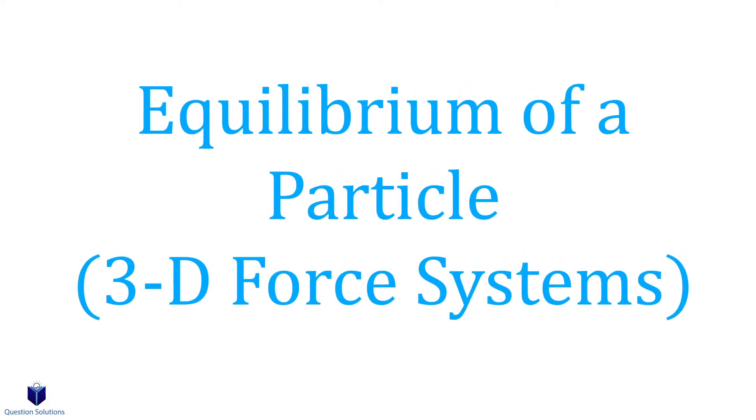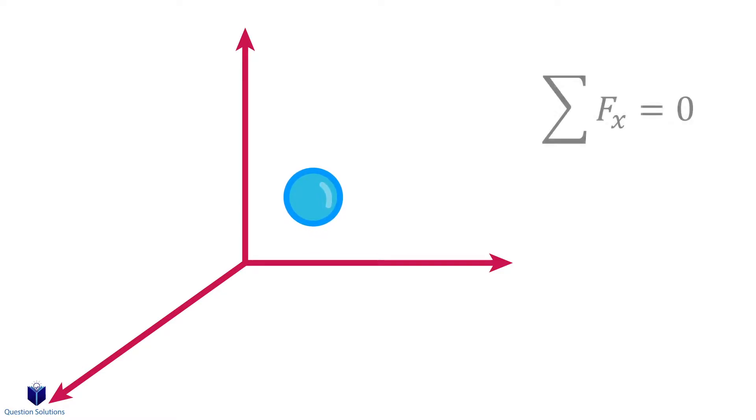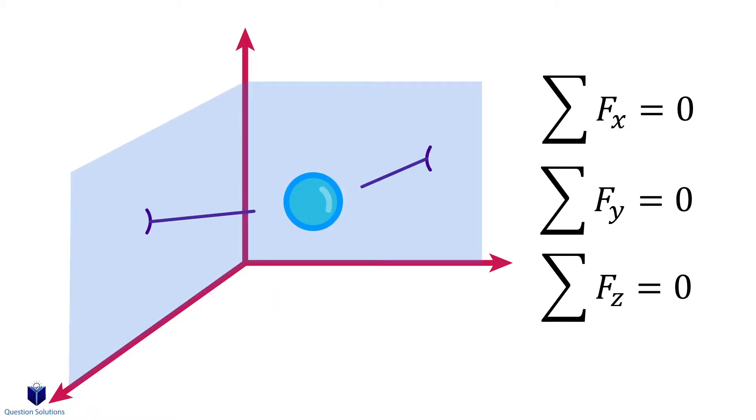Let's take a look at how to find unknown values when a particle is in equilibrium in three dimensions. We have the following equations to keep in mind. All we're saying is that for an object to stay in equilibrium, or in simple terms at rest, all the components of the forces affecting it must sum up to zero.